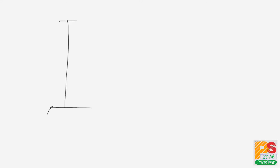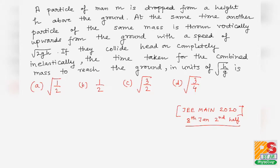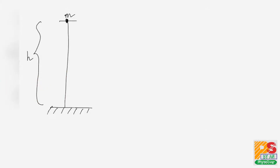This is the ground. The particle of mass m is released from rest at a height h from the surface. At the same time, another particle of the same mass m is thrown vertically upwards from the ground with an initial velocity of √(2gh).